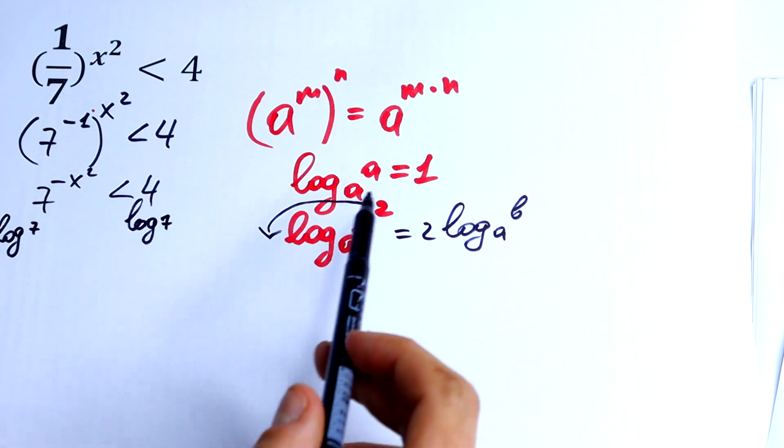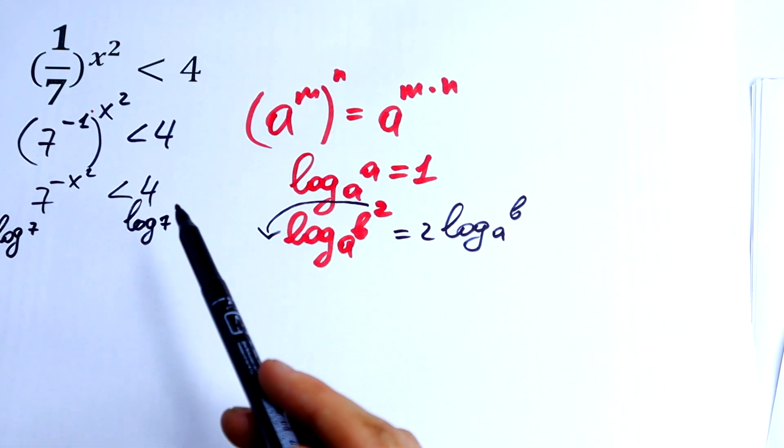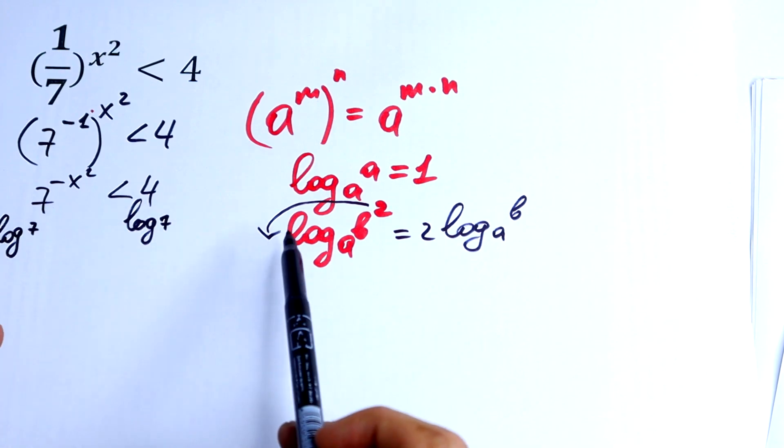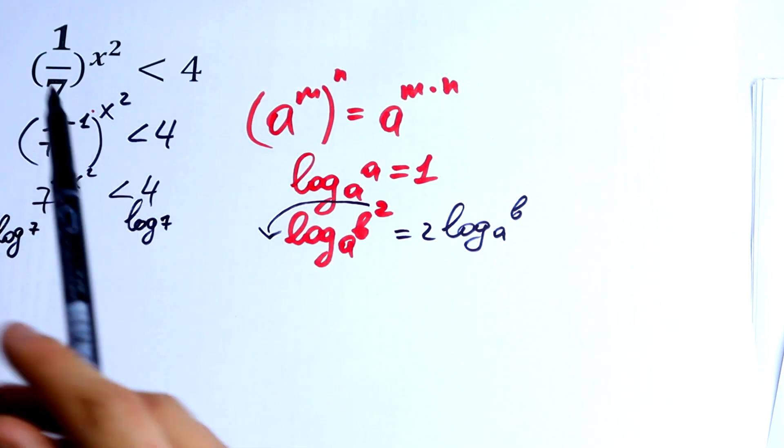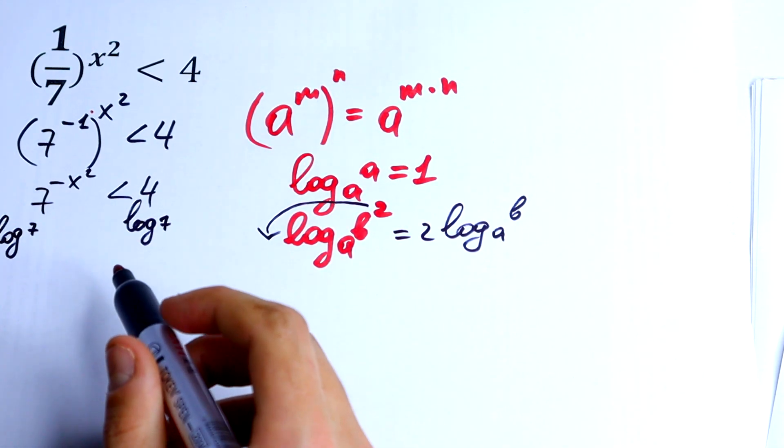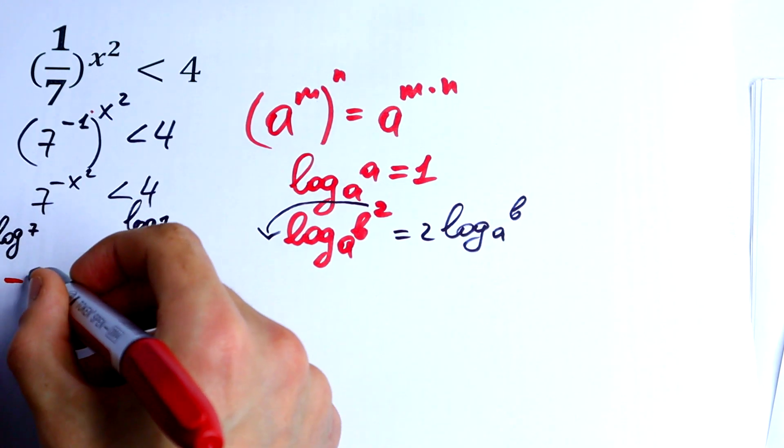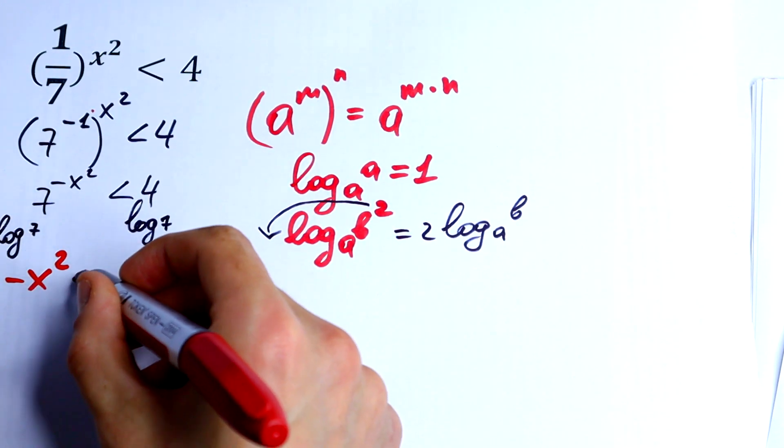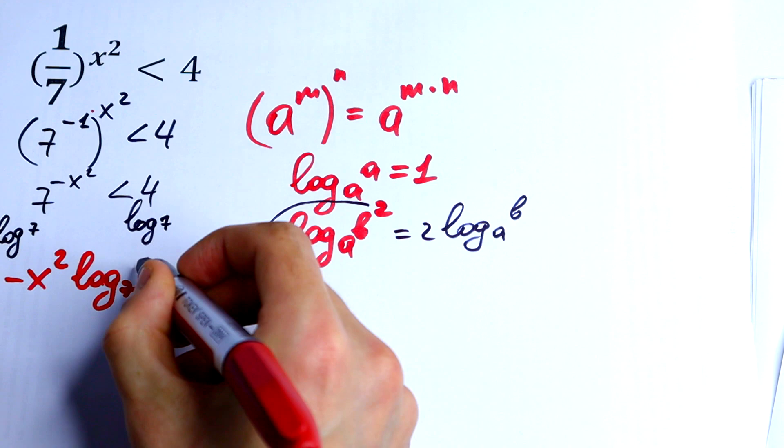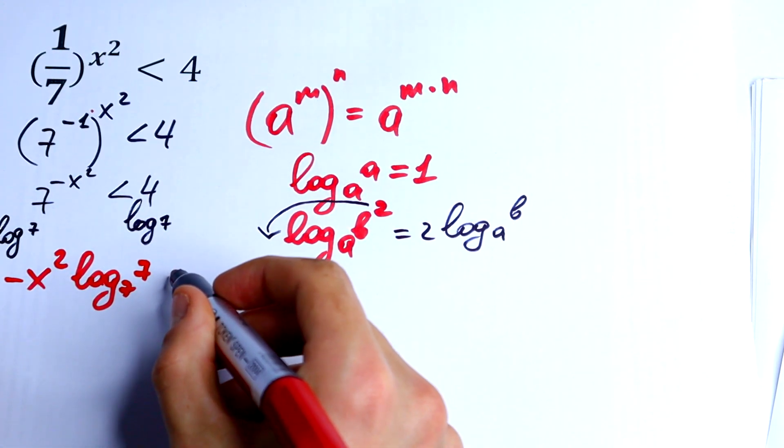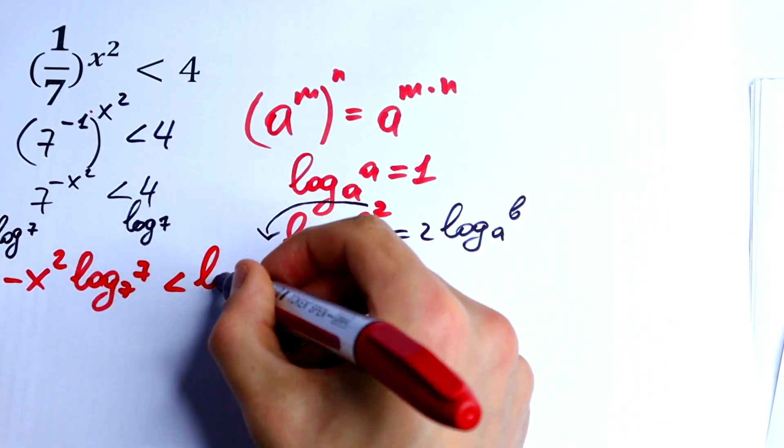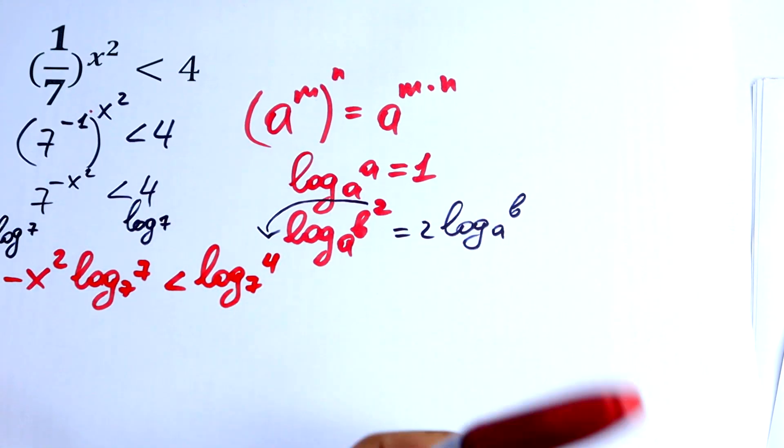So this would be equal to 1 and in the same way this exponent jumps on the left. So we will get minus x squared times log base 7 of 7 is less than log base 7 of 4.